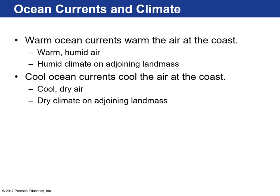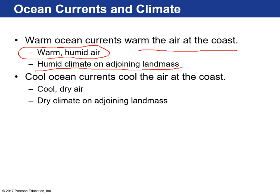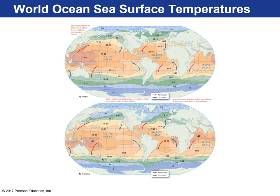To sum up: western boundary currents are typically very warm, and as a result, they influence the climate on the eastern side of continents — those warm ocean currents warm up the air on the coastline, so warm and humid air inundates the eastern boundaries of continents. That's why it's so humid and hot on the eastern side of the United States, especially during the summer. On the western side of a continent — the eastern side of an ocean basin — you have very cool ocean currents, creating very cool and dry air and dry climates like southern California.